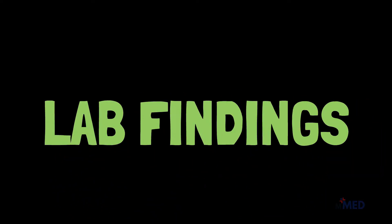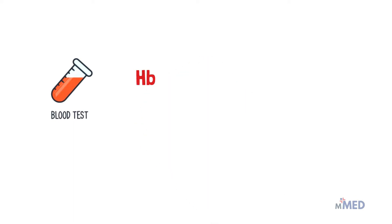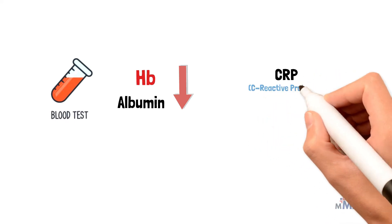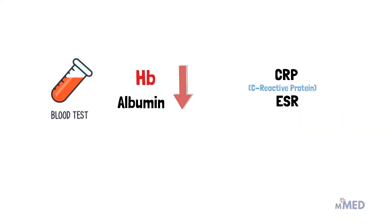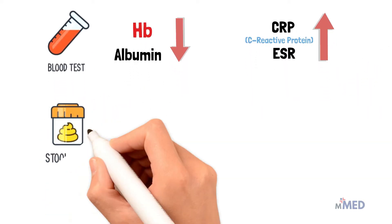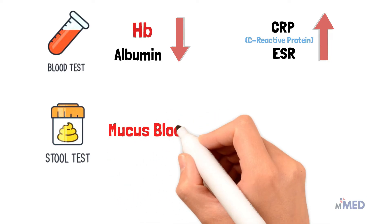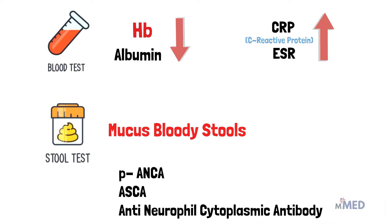Lab findings in ulcerative colitis: blood tests show low hemoglobin due to blood loss in stools, and low albumin because the colon cannot perform protein digestion properly. CRP and ESR are elevated as indicators of inflammation. A stool specimen shows mucus and bloody stools. Patients may test positive for pANCA (perinuclear antineutrophil cytoplasmic antibodies) and ASCA (anti-Saccharomyces cerevisiae antibodies), which are often present in ulcerative colitis.